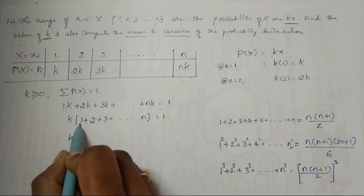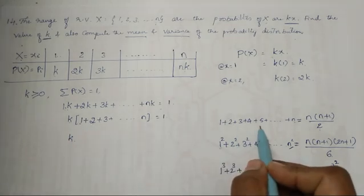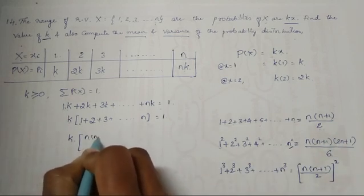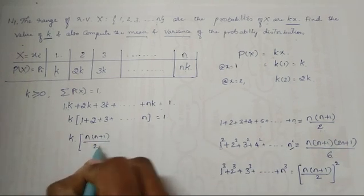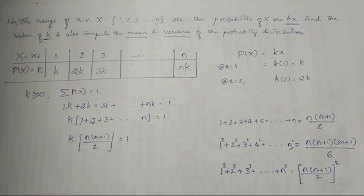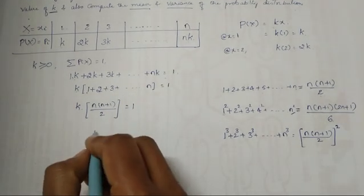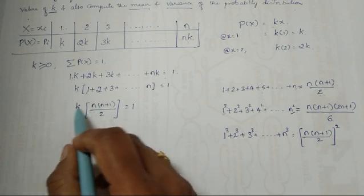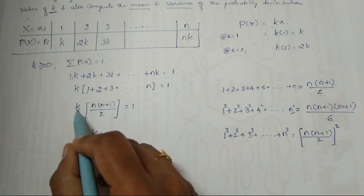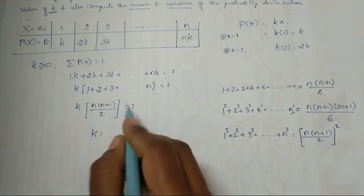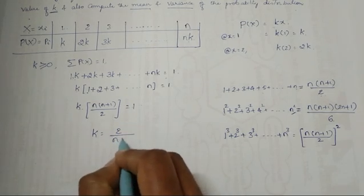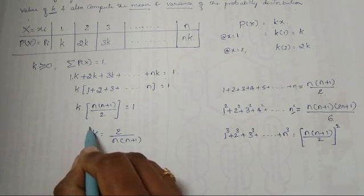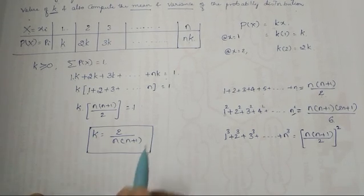Now I substitute 1 + 2 + 3 ... as n(n+1)/2. So k × n(n+1)/2 = 1. Since we want to calculate k, we shift all other terms: k = 2/[n(n+1)]. So the value of k is 2 divided by n(n+1).